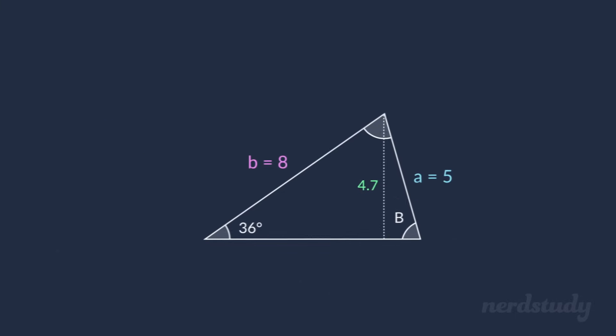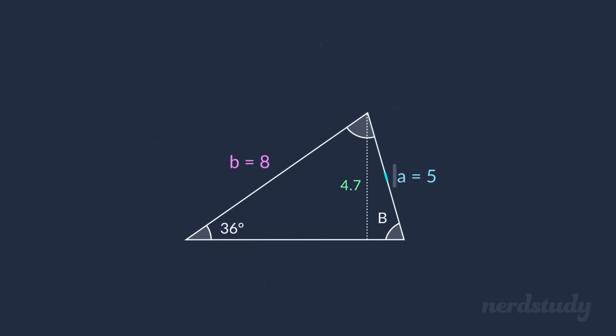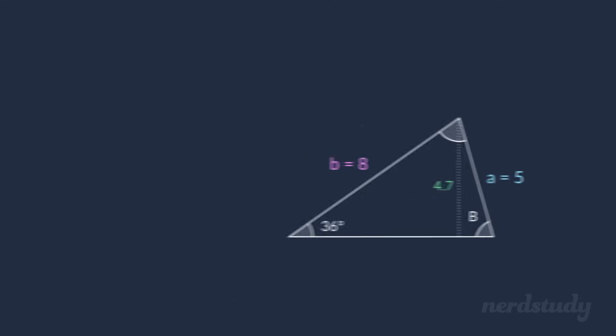So we know that this is indeed a complete triangle since the value of this side is greater than the height. Good! So now that we have a situation where h is less than a, which is less than b, we can expect to see two different triangles that satisfy the 36 degrees, the b of 8, and the a of 5. So let's try to find the two different angles that produce these triangles through the use of the sine law.